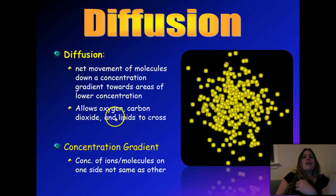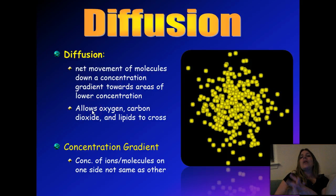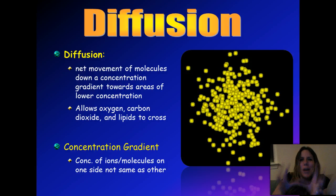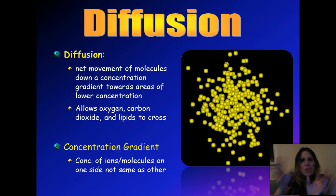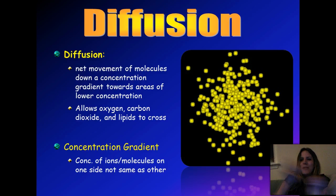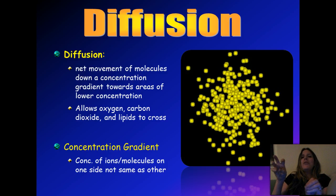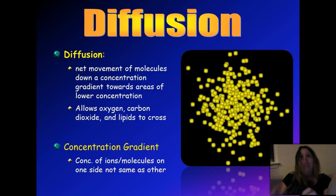Definition: diffusion is the net movement of molecules down a concentration gradient towards areas of lower concentration. A concentration gradient simply means there's a difference in concentration between two areas — highly concentrated here and less concentrated there. In diffusion, molecules go down their concentration gradient, from an area where they're highly concentrated to an area where they're less concentrated.